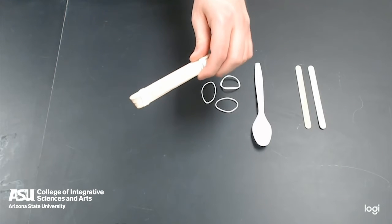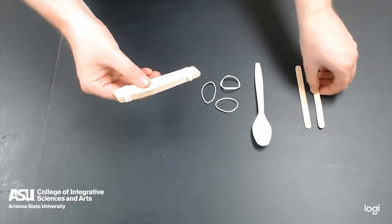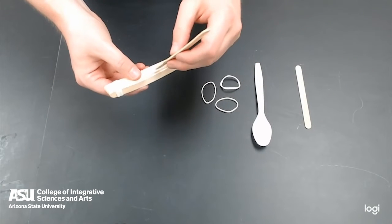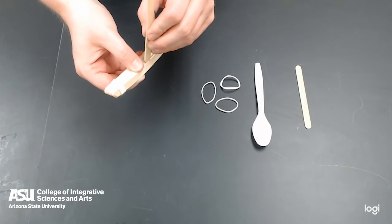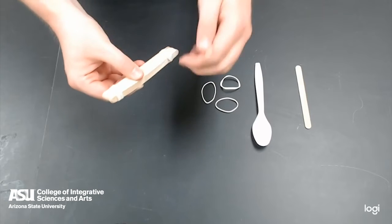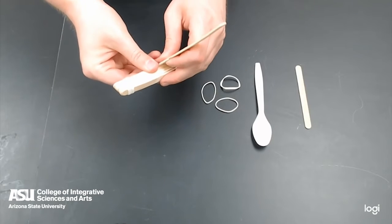After we've put the popsicle sticks together with the rubber bands on each end, we are now going to take one of the popsicle sticks we stuck off to the side and we are going to slide it in between one of the sets of popsicle sticks. You want to do it either at the very top or at the very bottom. Whichever side you pick is going to become the bottom.